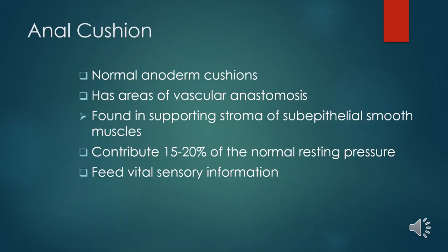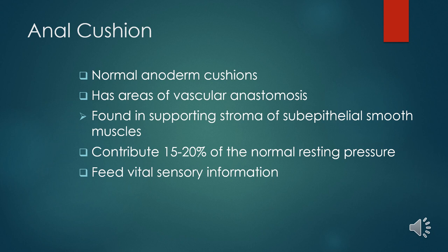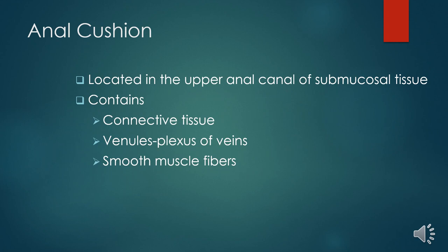The anorectal region has normal anoderm and is an area of vascular anastomosis. These vessels are found within the stroma or submucosal smooth muscles and contribute about 15 to 20 percent of the normal resting pressure in the anus. They also help feed sensory information of the anorectal region. The anal cushion is located in the upper anal canal, with submucosa containing connective tissue, venous plexus, and smooth muscle fibers.